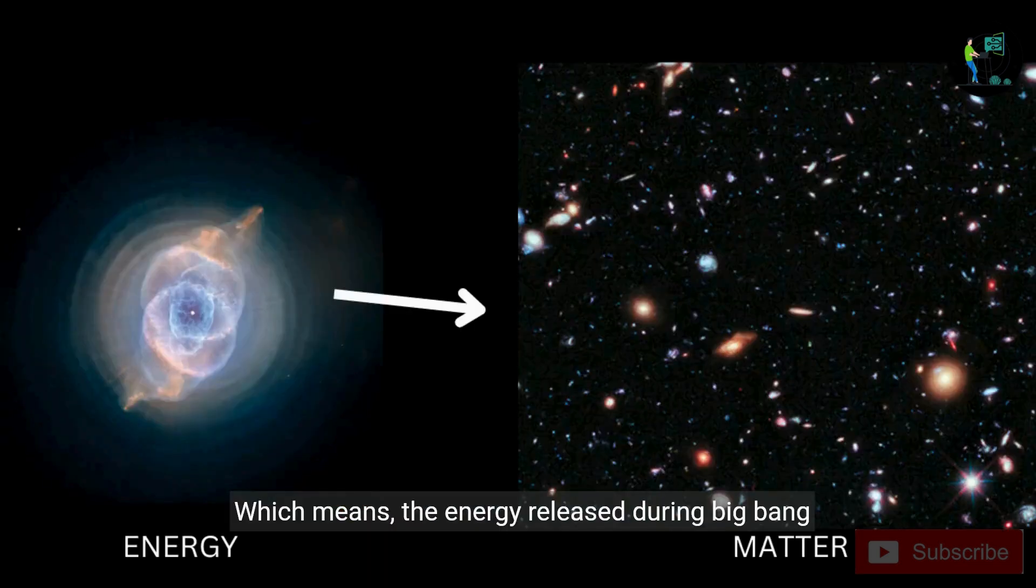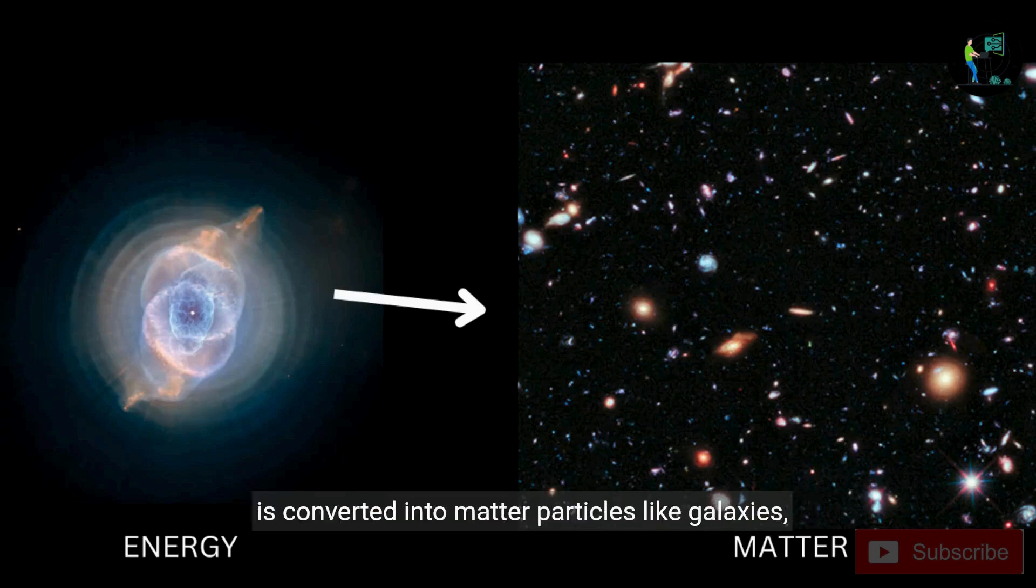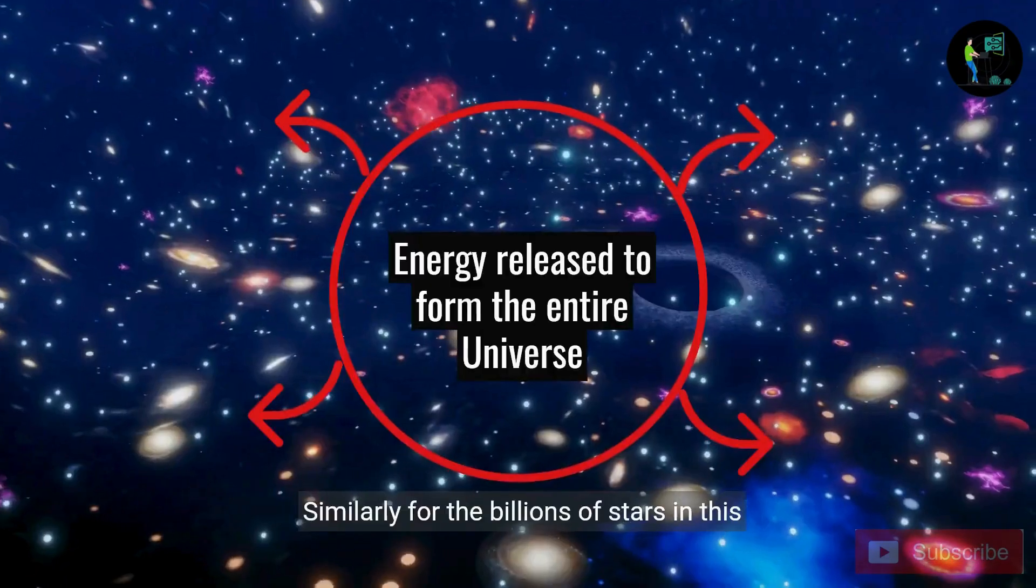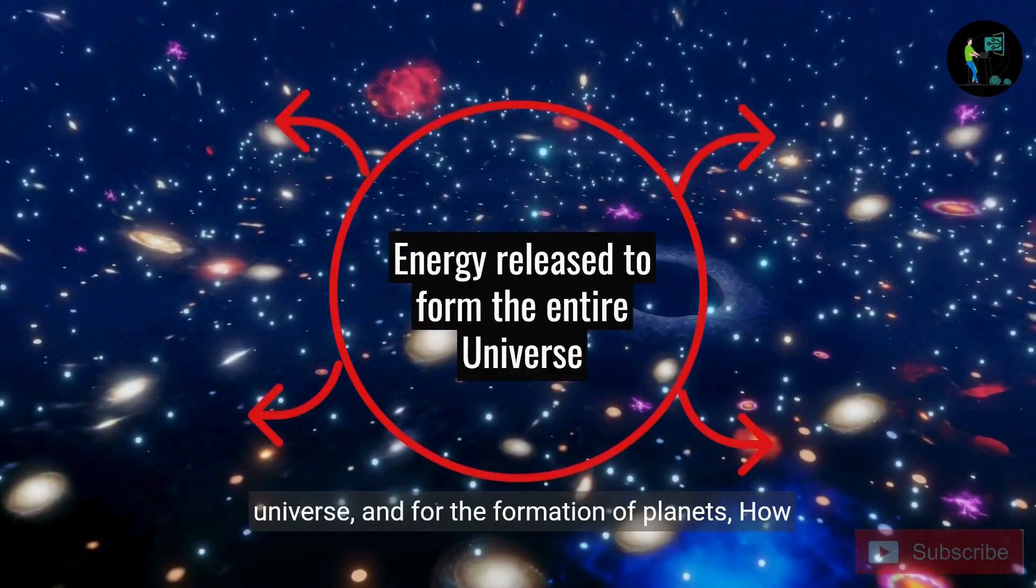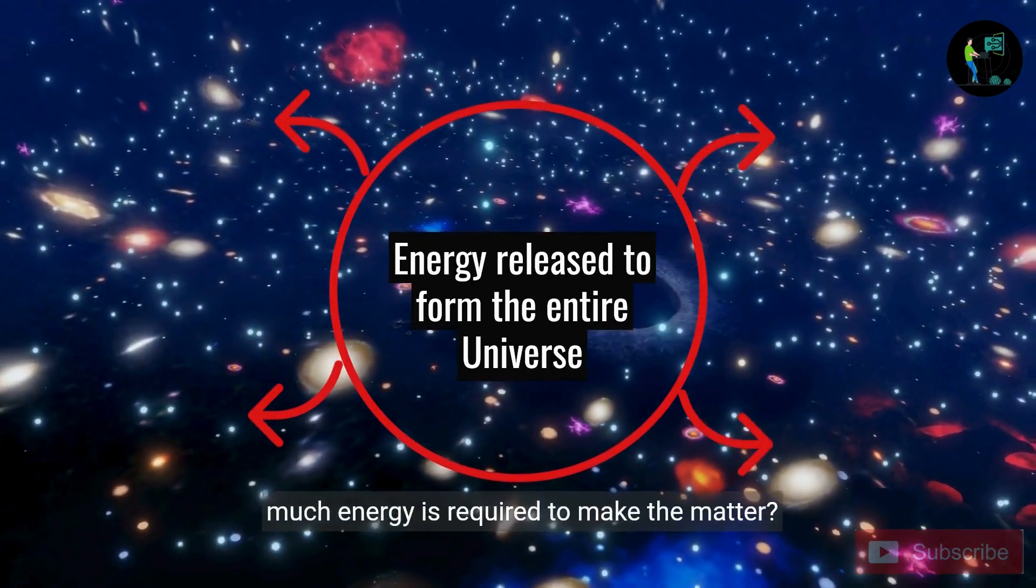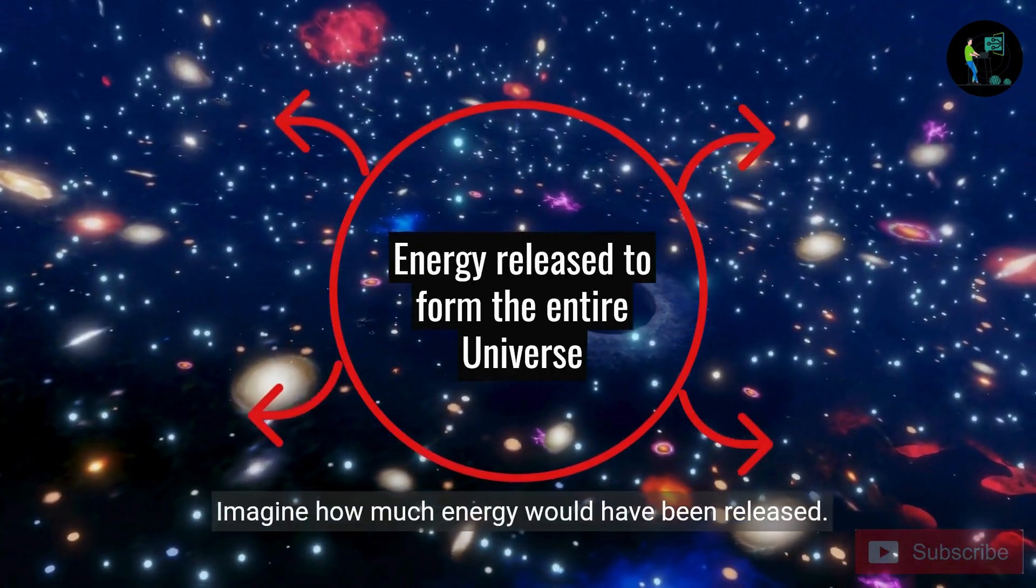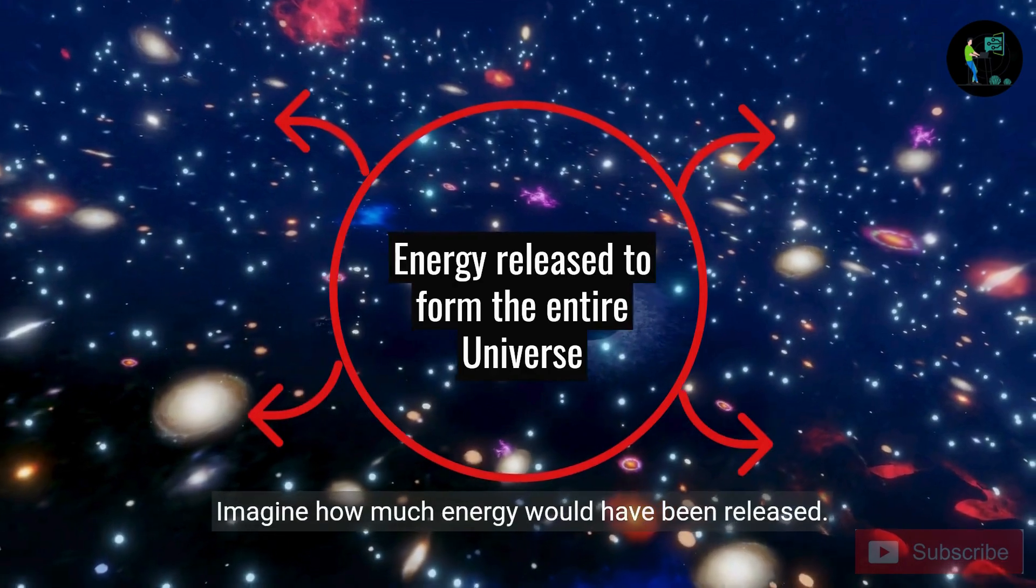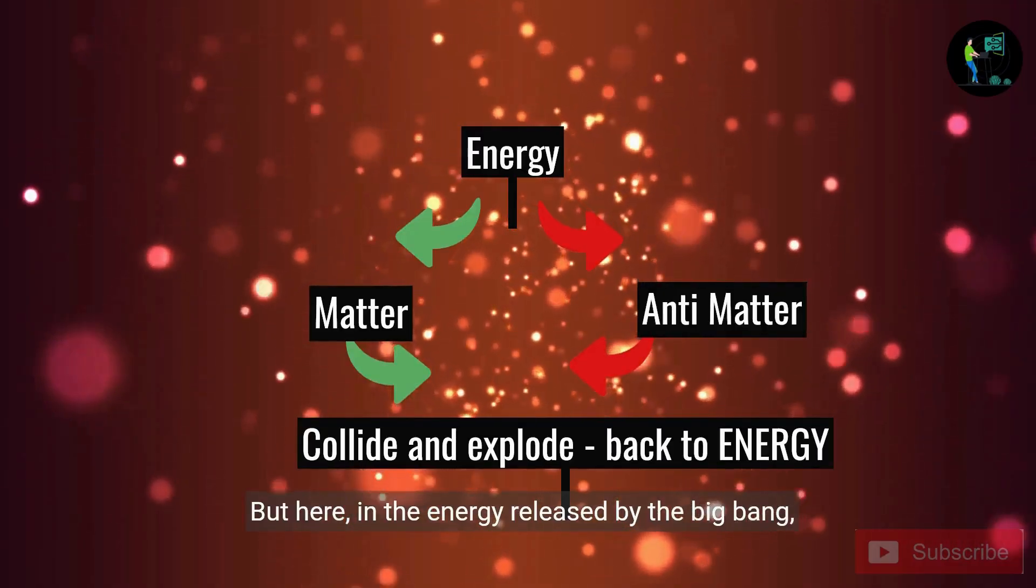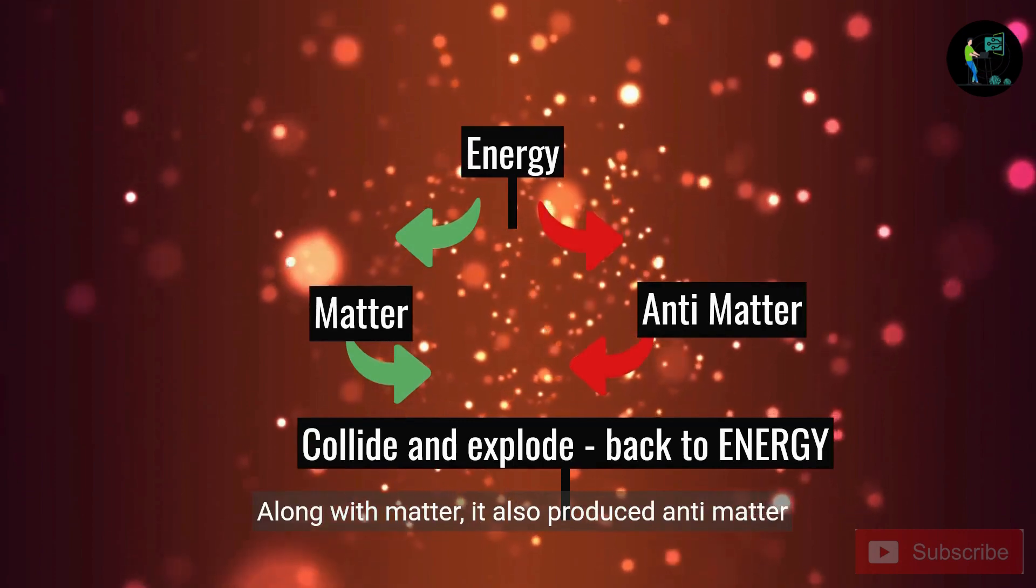Which means the energy released during Big Bang is converted into matter particles like galaxies, stars, planets, etc. Be a little careful here. When a small bomb explodes, a tremendous amount of energy is released. Similarly, for the billions of stars in this universe, and for the formation of planets, how much energy is required to make the matter? Imagine how much energy would have been released. But here, in the energy released by the Big Bang, along with matter, it also produced antimatter, which is its complete opposite.